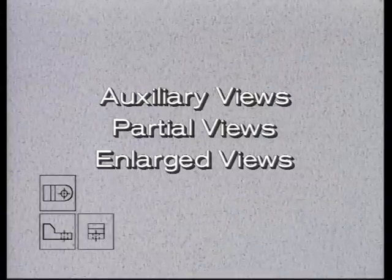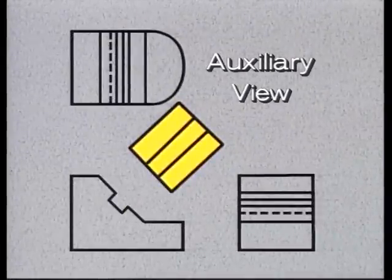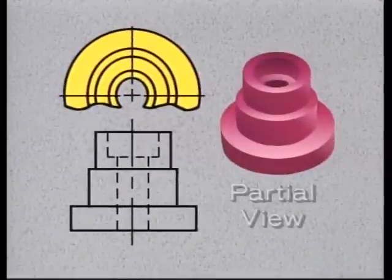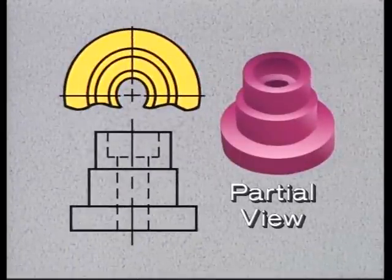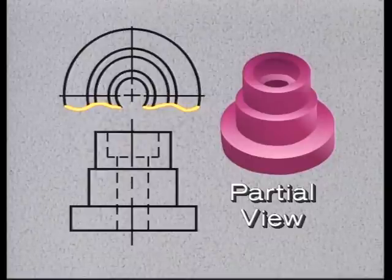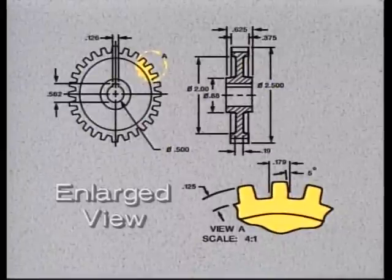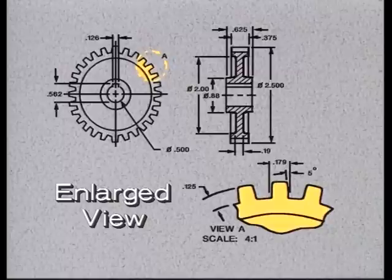Let's pause to review. Auxiliary views, partial views, and enlarged views are used to help clarify the principal views. An auxiliary view is used to represent an inclined surface, which would appear foreshortened in a principal view. A partial view is sometimes used for symmetrical parts to save space on the drawing; a break line indicates where the view is broken off. A partial view is also used to clarify a feature without having to resort to a complete view. An enlarged view is used to show a feature in greater detail and to allow room for dimensioning.